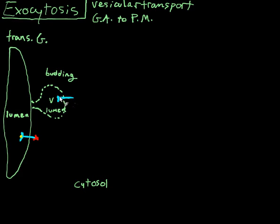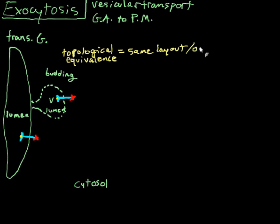And it's important to look at the orientation of the receptor. You want to keep the same things in the same place. And what I mean by that is I have the part of the receptor that's facing the cytosol right here is still facing the cytosol. And it's over here. And that can be referred to as topological equivalence. And that means it's the same layout or orientation.